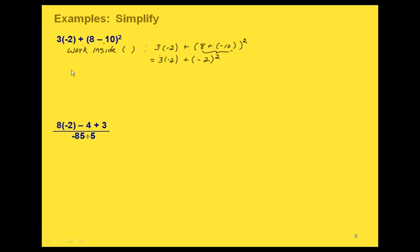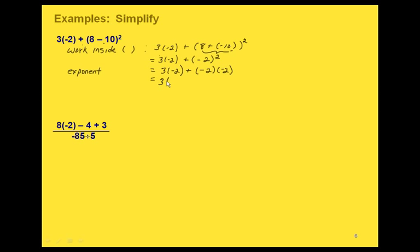Now we have our exponent. Notice that our negative 2 is inside the parentheses, so we can rewrite this as negative 2 times negative 2, since negative 2 squared just means you're multiplying negative 2 times itself. Since these are the same sign, that comes out positive, so we end up with a positive 4.